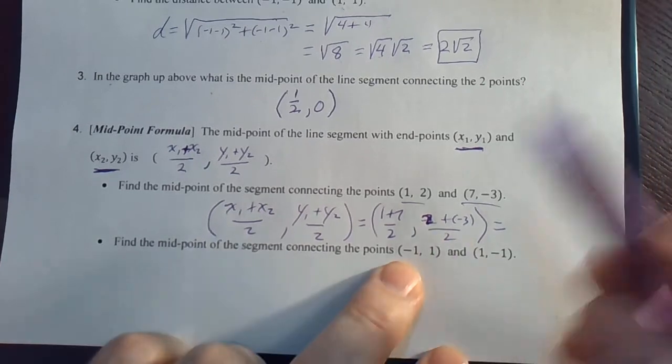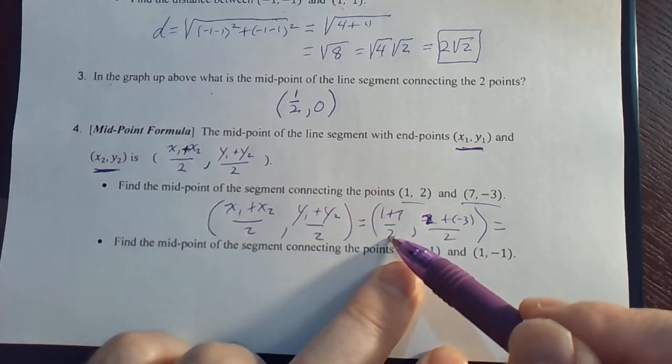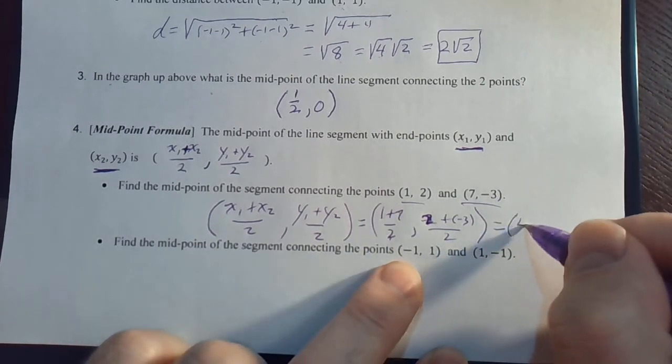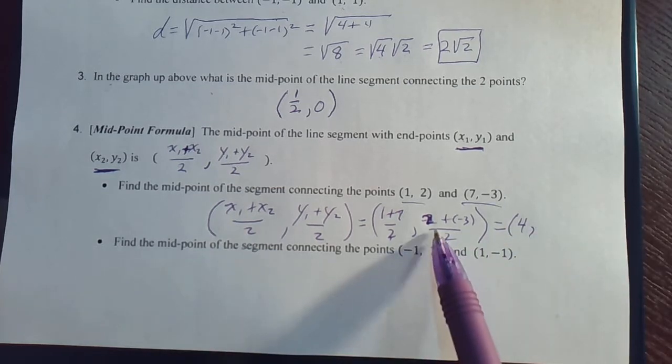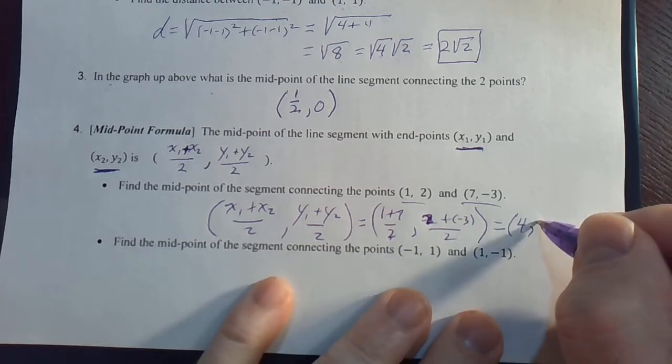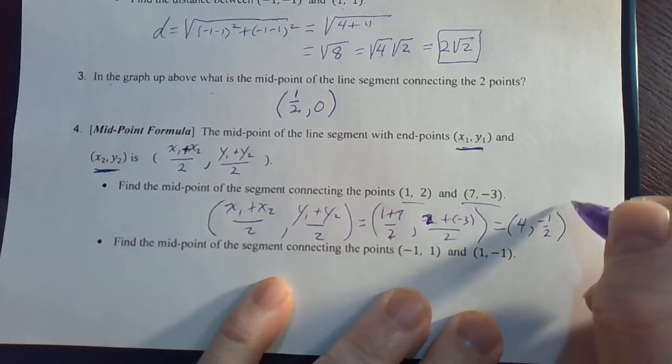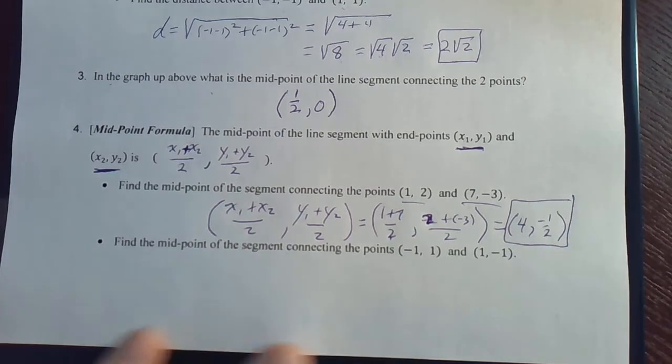Let's simplify this. 7 plus 1, 8 over 2 is 4. Now, what's this one going to be? 2 plus a negative 3. 2 minus 3 is negative 1, so it's negative 1 over 2. That's the midpoint.